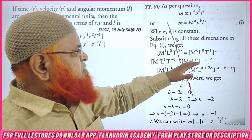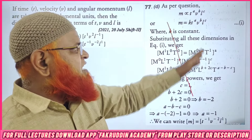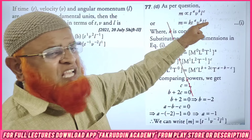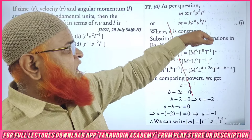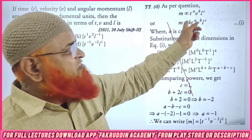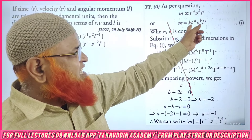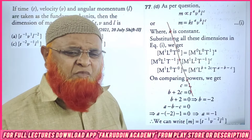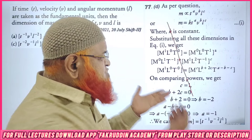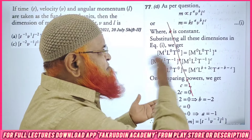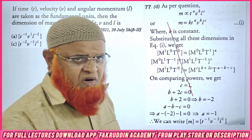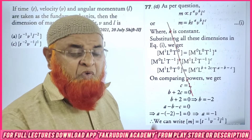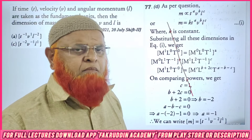What is our traditional method explaining here? He is asking us to find out the mass in terms of time, velocity, and angular momentum. The method which was previously used regularly is: time is taken as power of A, power of B velocity, and power of C as angular momentum. Solve by comparing the powers — and waste a lot of your valuable time.